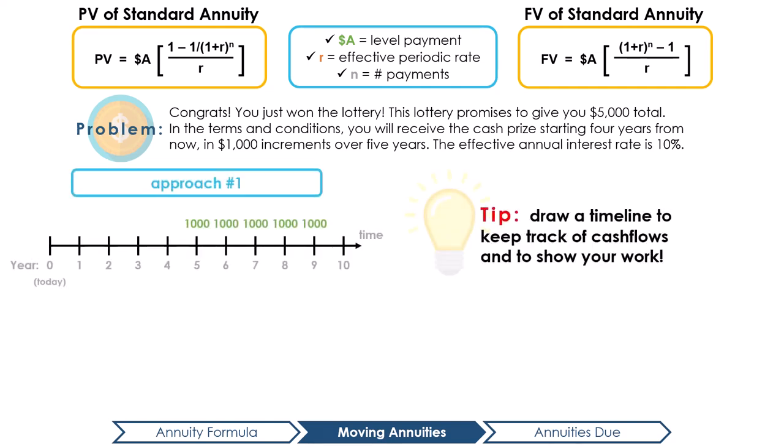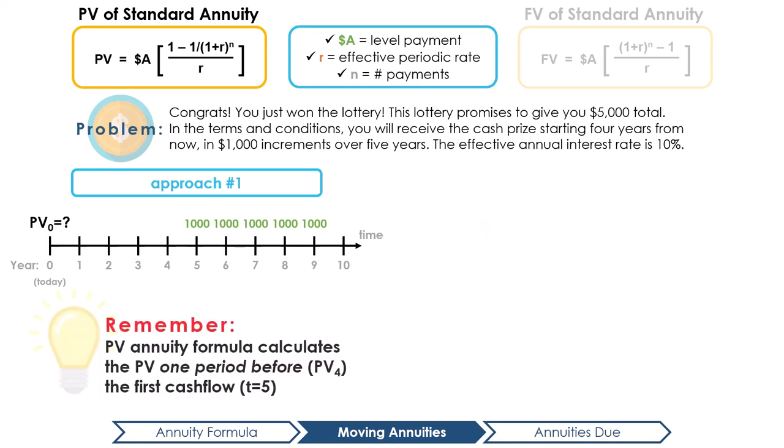The effective annual interest rate is 10%. Using the PV of the annuity formula, we can calculate the present value of the annuity and then discount the value back to see how much the annuity is worth today, i.e. the present value of the cash payments that occur over the five years at PV0, or today. It is important to remember that the PV of the annuity formula calculates the PV of the cash flows one time period before the first cash flow begins, at t equals 4.